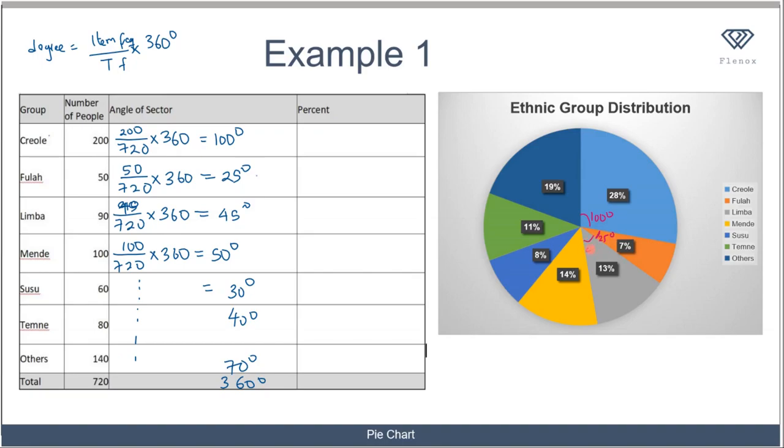The information here is given in terms of percentage. How do we convert from an angle in degrees to percentage? It's very simple. You divide the item frequency by the total frequency, but instead of multiplying by 360, we multiply by 100 because percentage means we are dividing into 100.